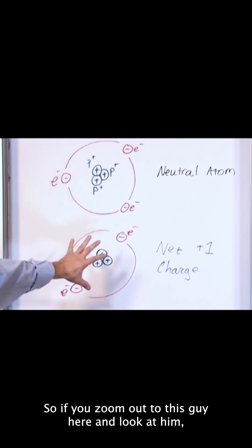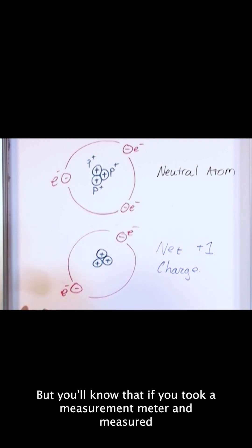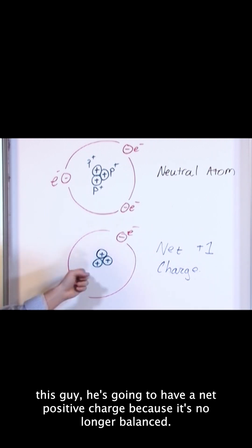So if you zoom out to this guy here and look at him, you're not going to necessarily see individually what's happening, but you'll know that if you took a measurement meter and measured this guy, he's going to have a net positive charge because it's no longer balanced.